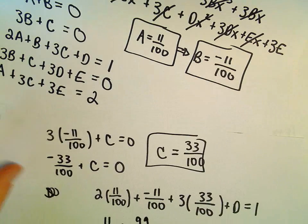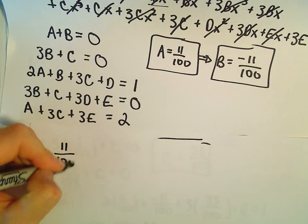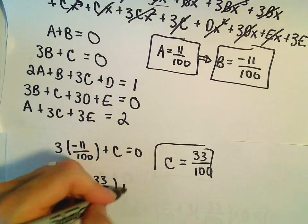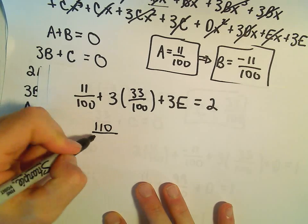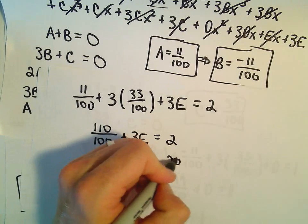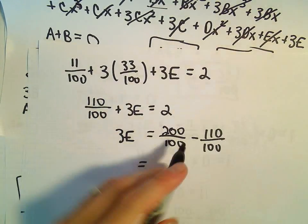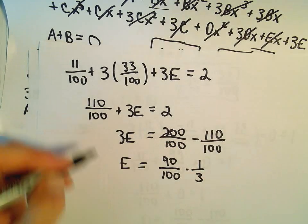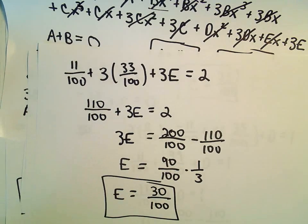Last, we find E using the constant equation: 11 over 100 plus 3 times 33 over 100 plus 3E equals 2. That's 110 over 100 plus 3E equals 2, so 3E equals 200 over 100 minus 110 over 100 equals 90 over 100. Multiplying both sides by one third gives E equals 30 over 100.